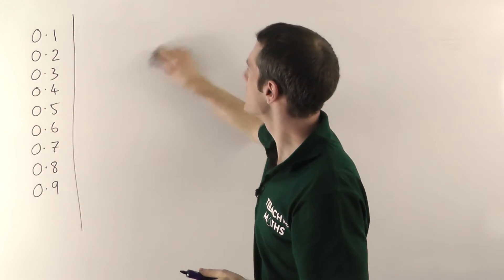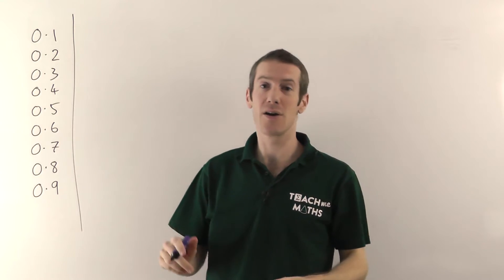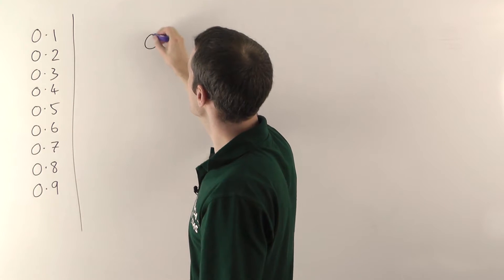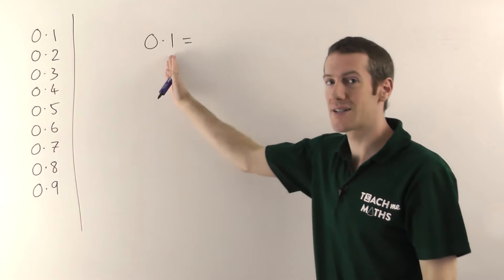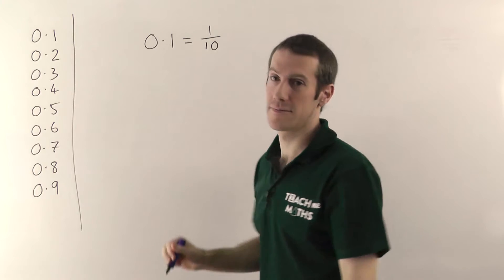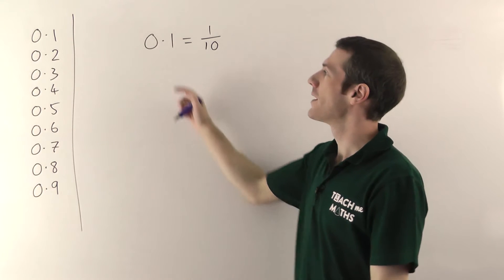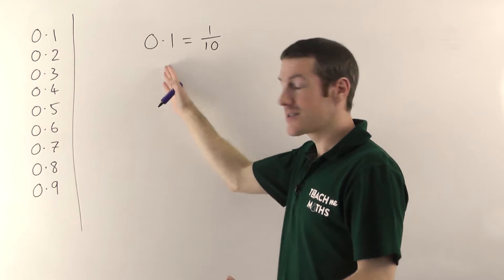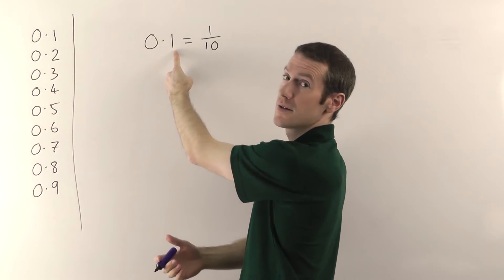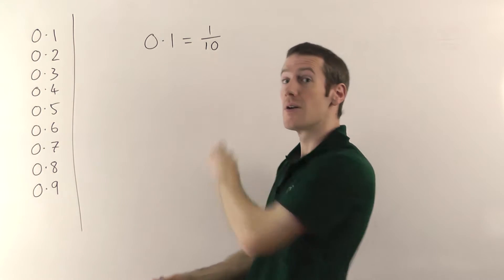The first thing you need to realise is that decimals were invented by man. A long time ago, some clever mathematical types came up with this system. You need to realise that 0.1 is defined to be 1 tenth. There's no mathematical proof that gets you there — it's just by definition. If you think about the place value columns, you've got no units and one in the tenths column. So that is 1 tenth, by definition.